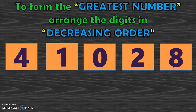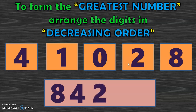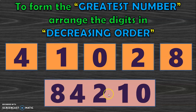The biggest digit given is 8. The next number smaller than 8 is 4. The number smaller than 4 is 2. Smaller than 2 is 1, and the smallest of the given digits is 0. So the greatest 5-digit number that can be formed using these digits is 84,210.